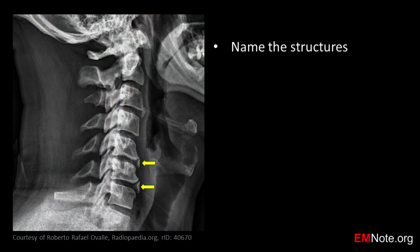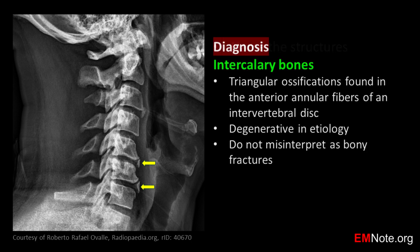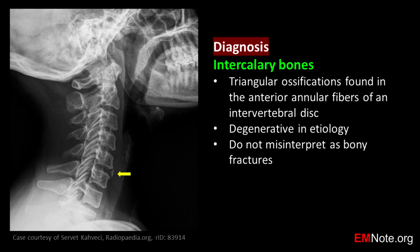Name the structures that the arrows are pointing at. Intercalary bones are triangular ossifications found in the anterior annular fibers of an intervertebral disc and are believed to be degenerative in etiology. Do not misinterpret intercalary bones as bony fractures.